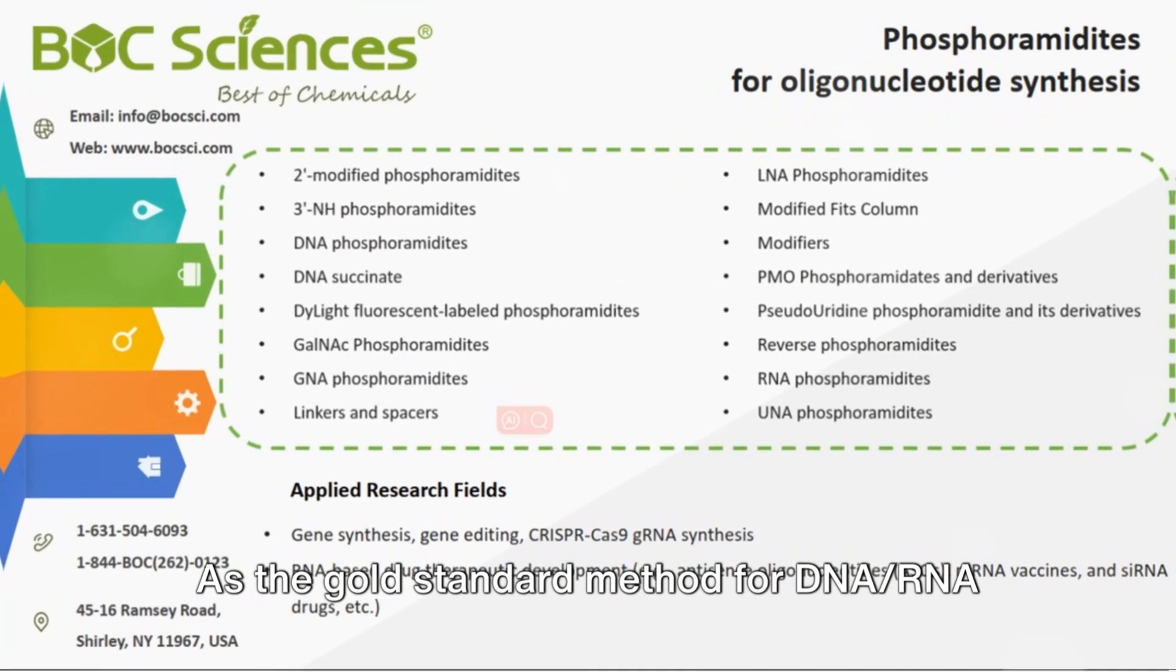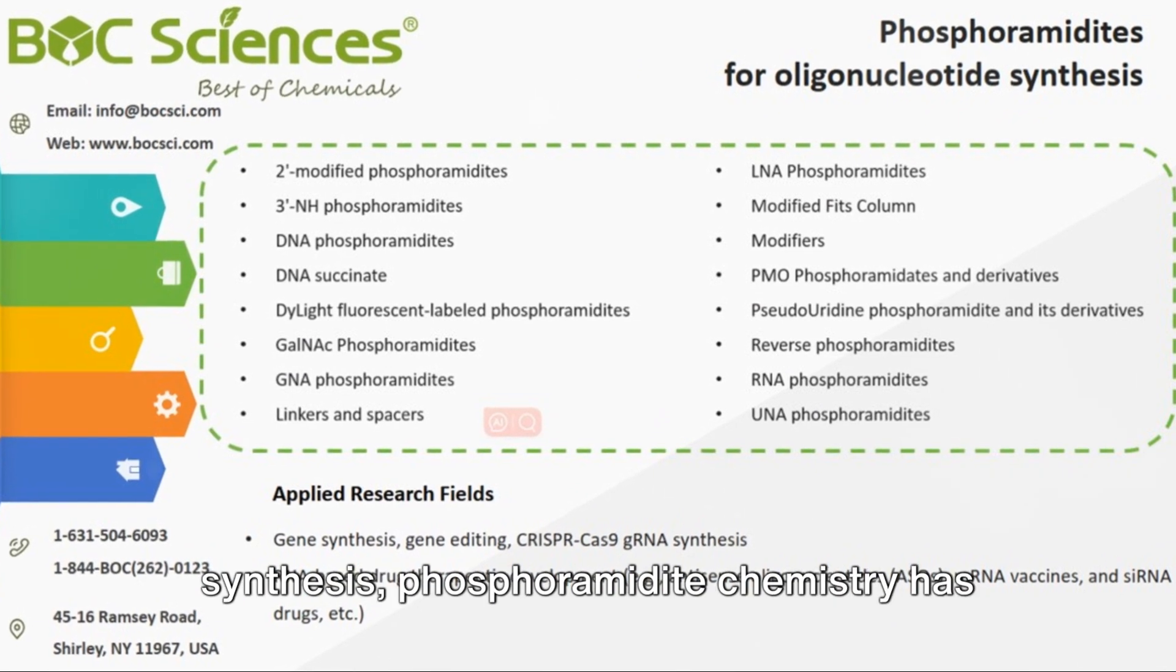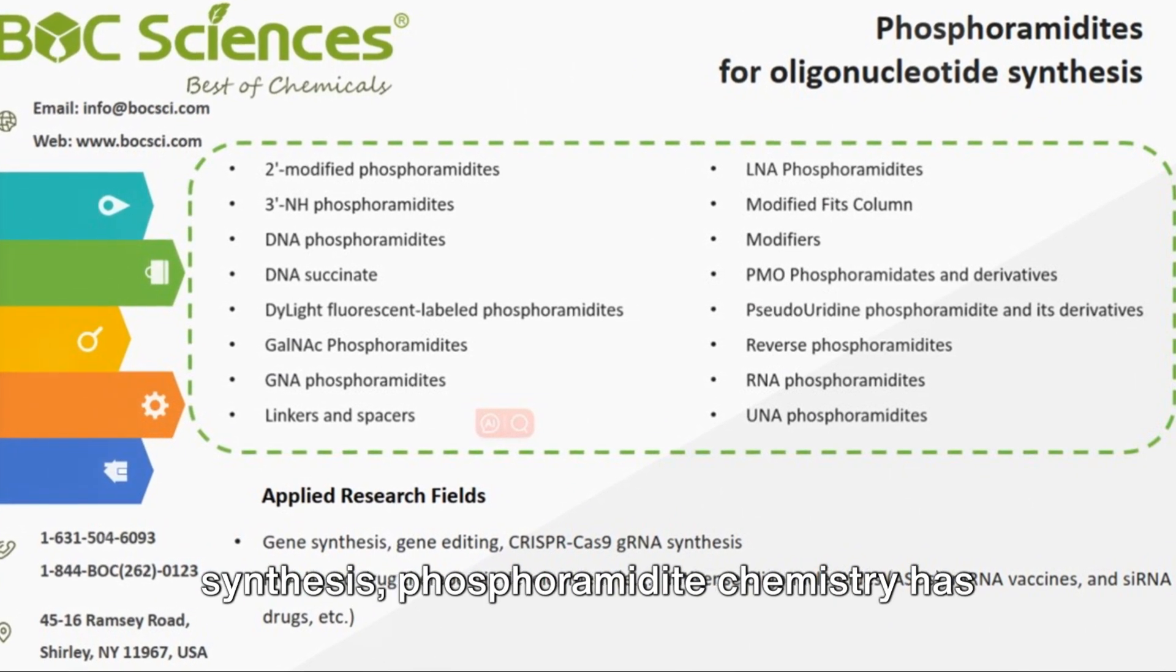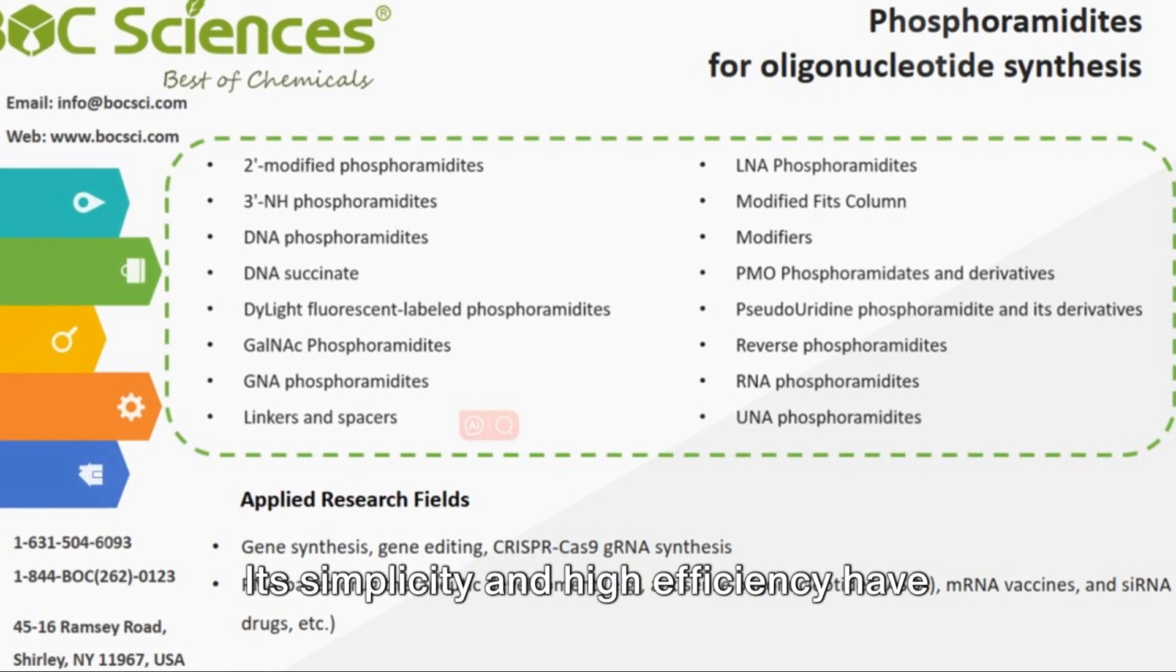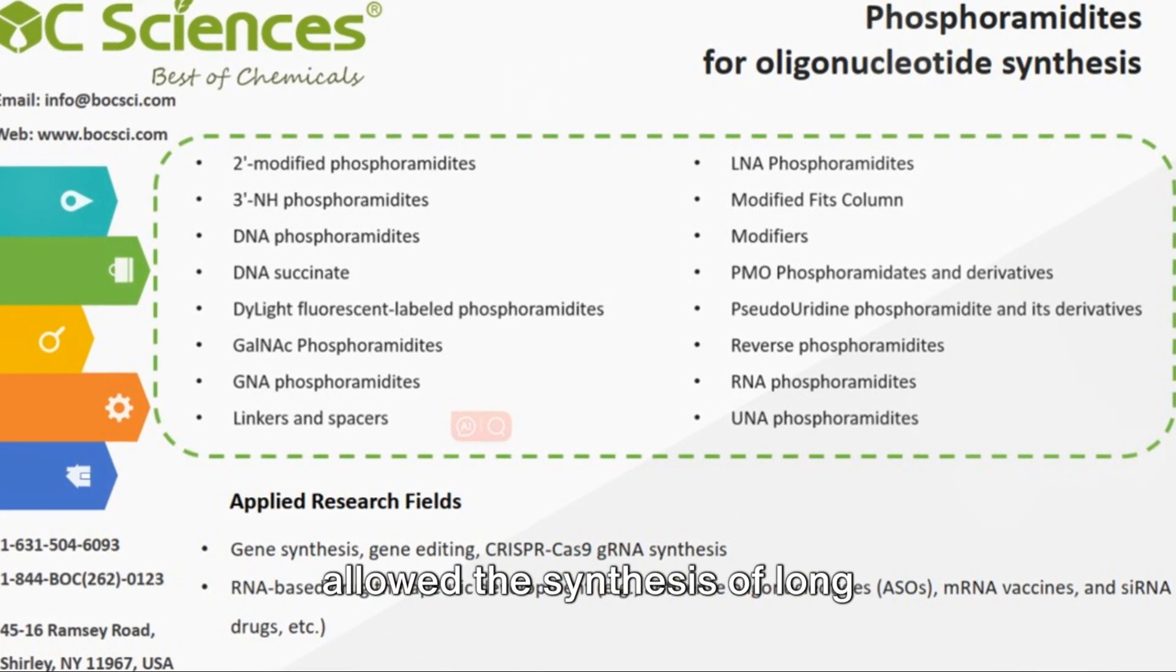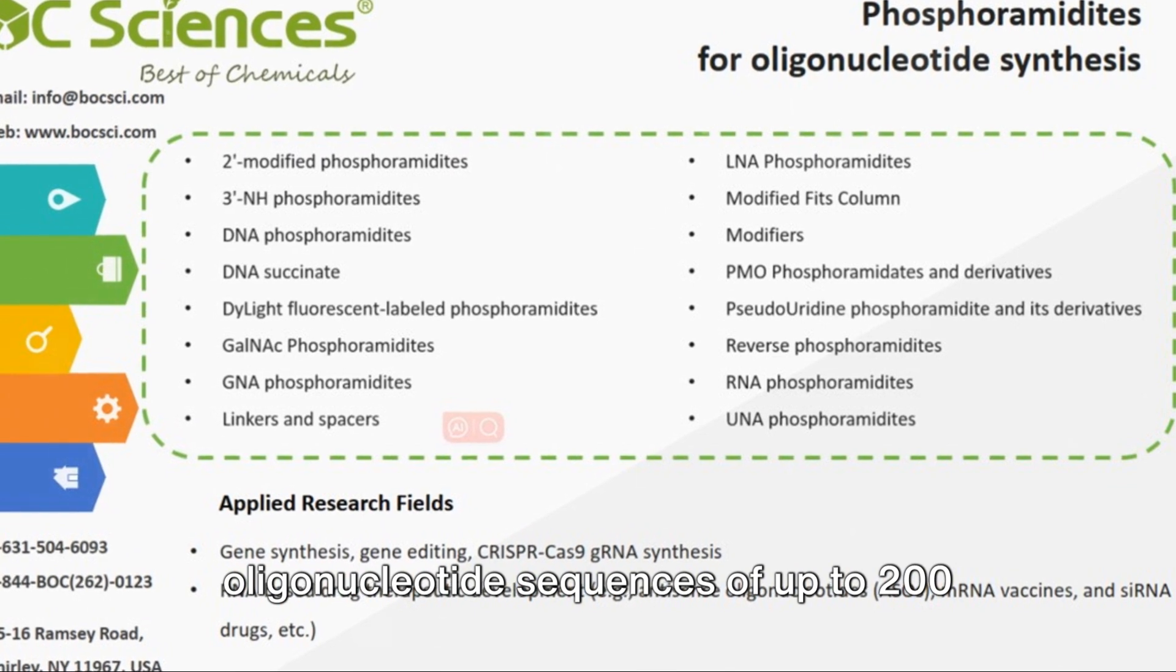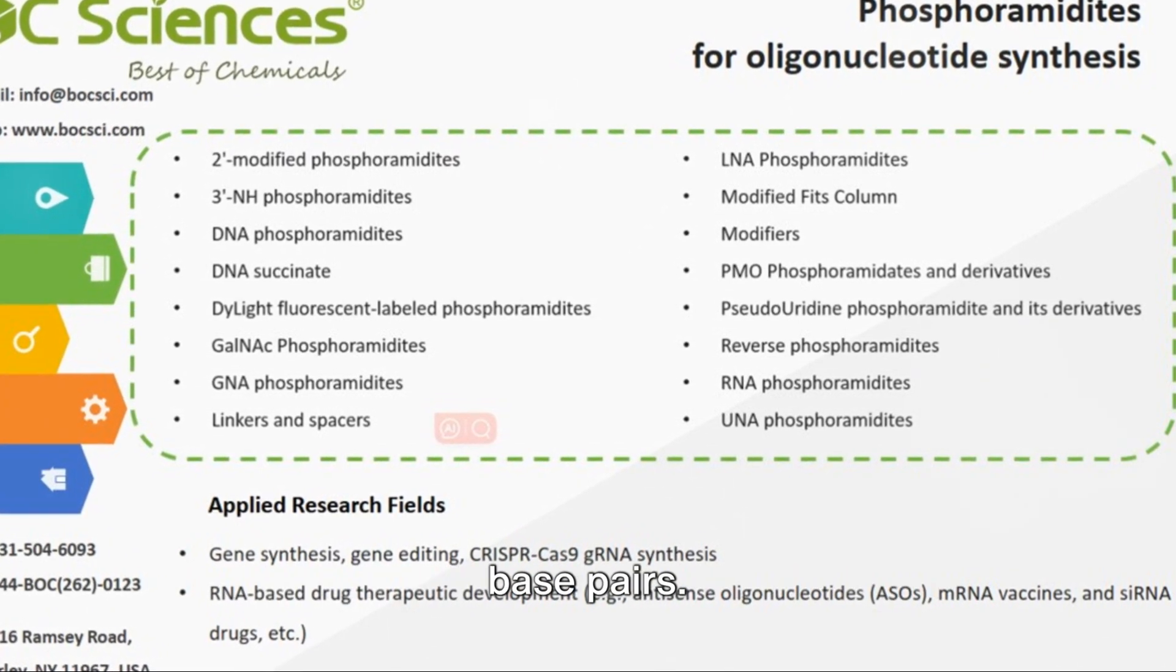As the gold standard method for DNA-RNA synthesis, phosphoramidite chemistry has been used for nearly 35 years. Its simplicity and high efficiency have allowed the synthesis of long oligonucleotide sequences of up to 200 base pairs.